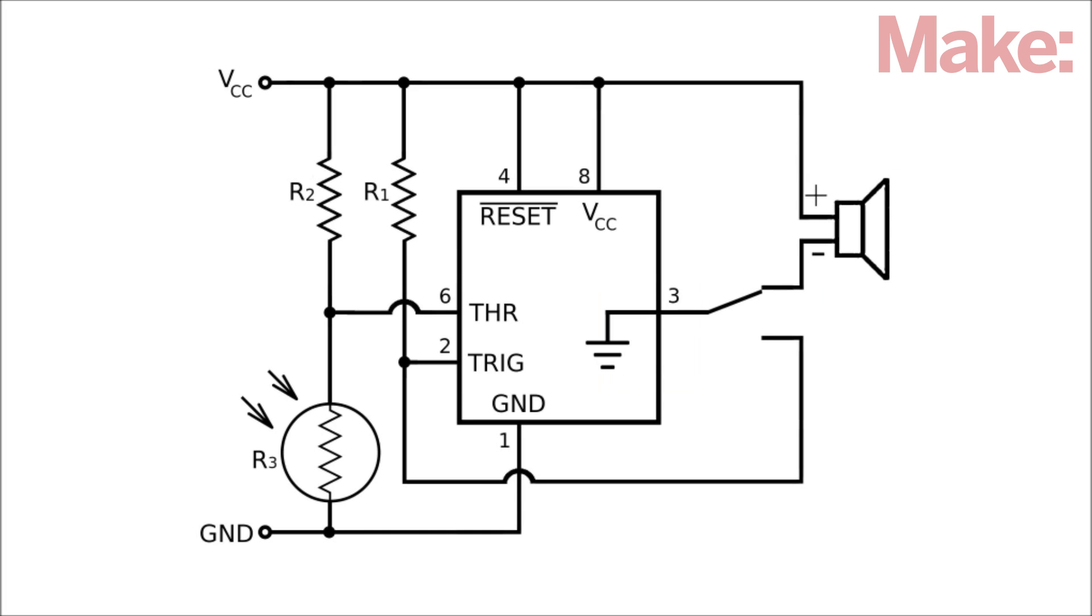To turn off the alarm and reset the system, the switch disconnects the speaker and sends the low signal to the trigger at pin 2. Flipping the switch back will reactivate the system.